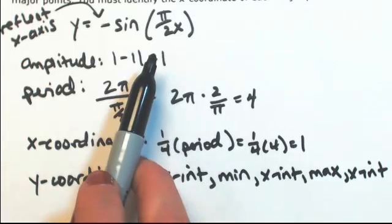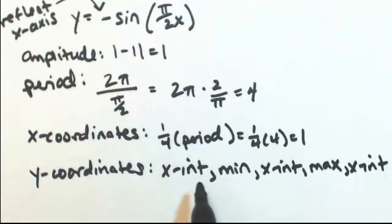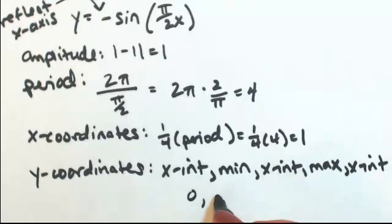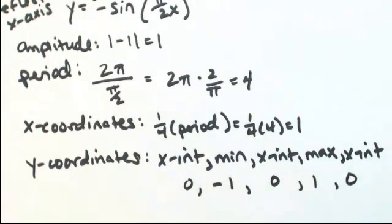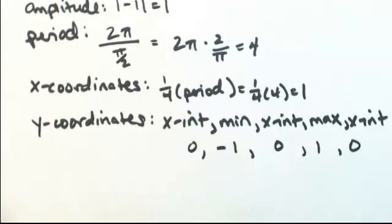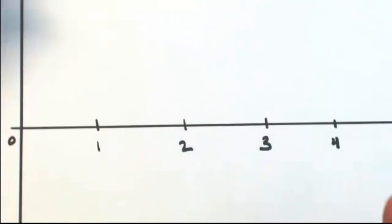The min and max are determined by the amplitude. The x-intercept is 0, the min is negative of the amplitude which is negative 1, x-intercept 0, max of 1, x-intercept 0. Using that pattern, let's get our points in.